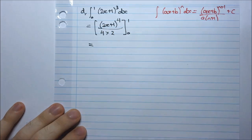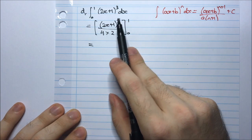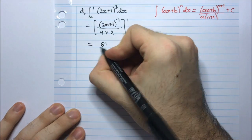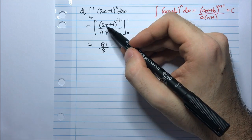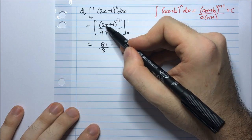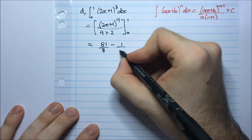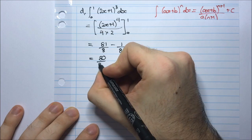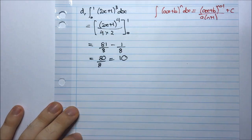So if I substitute 1 in, I'm going to have 2(1) + 1, so that's 3⁴. 3⁴ is 81. So 81/8 minus, substituting 0 in, I have 2(0) is 0 plus 1. So 1⁴ is 1 divided by 8. So that's 80/8 which is 10. And that's that one done.